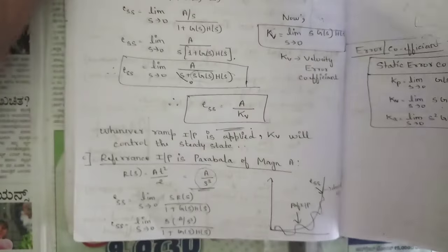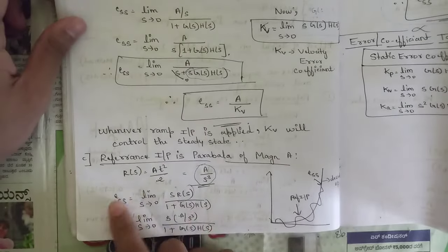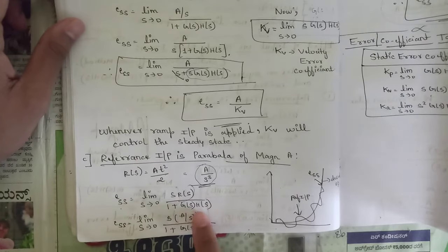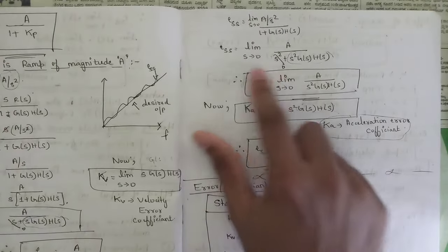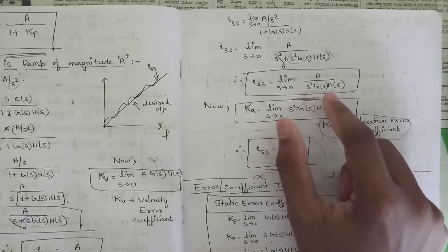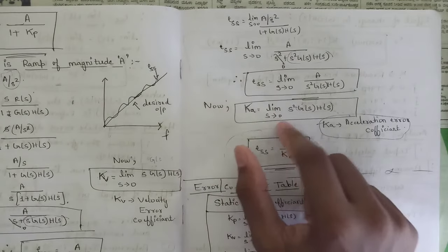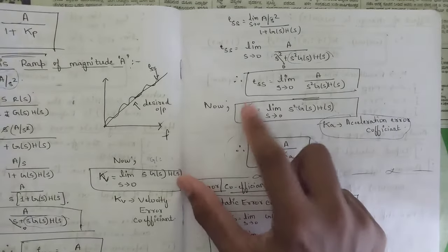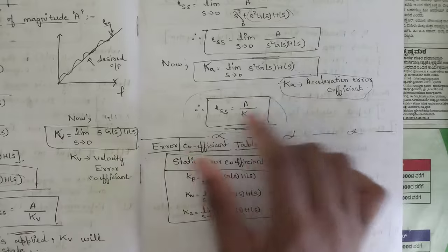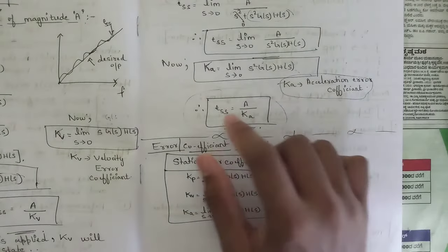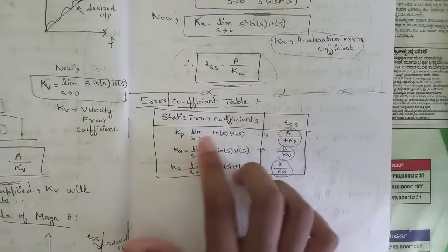For parabolic input, r(t) = At²/2, so R(s) = A/s³. Substituting in the formula and cancelling terms, we are left with Ka = lim(s→0) s²·G(s)·H(s), called the acceleration error coefficient. Substituting back, the steady state error for parabolic input is e_ss = A / Ka.